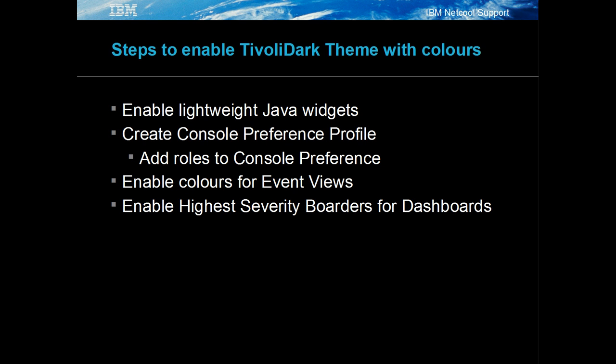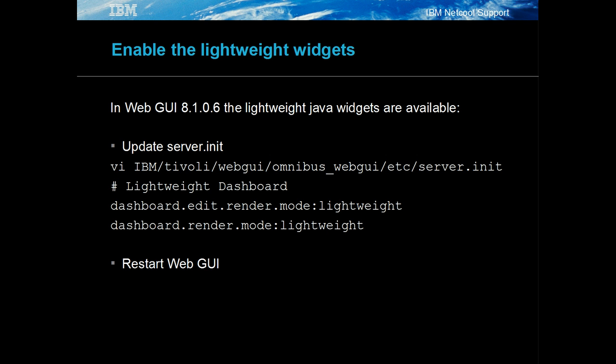To enable the example theme you need to enable lightweight Java widgets, create a Tivoli dark theme console preference, enable colors in the event viewers, and enable high severity border in the dashboards. Lightweight dashboards are enabled through a new property setting in the server.init file.